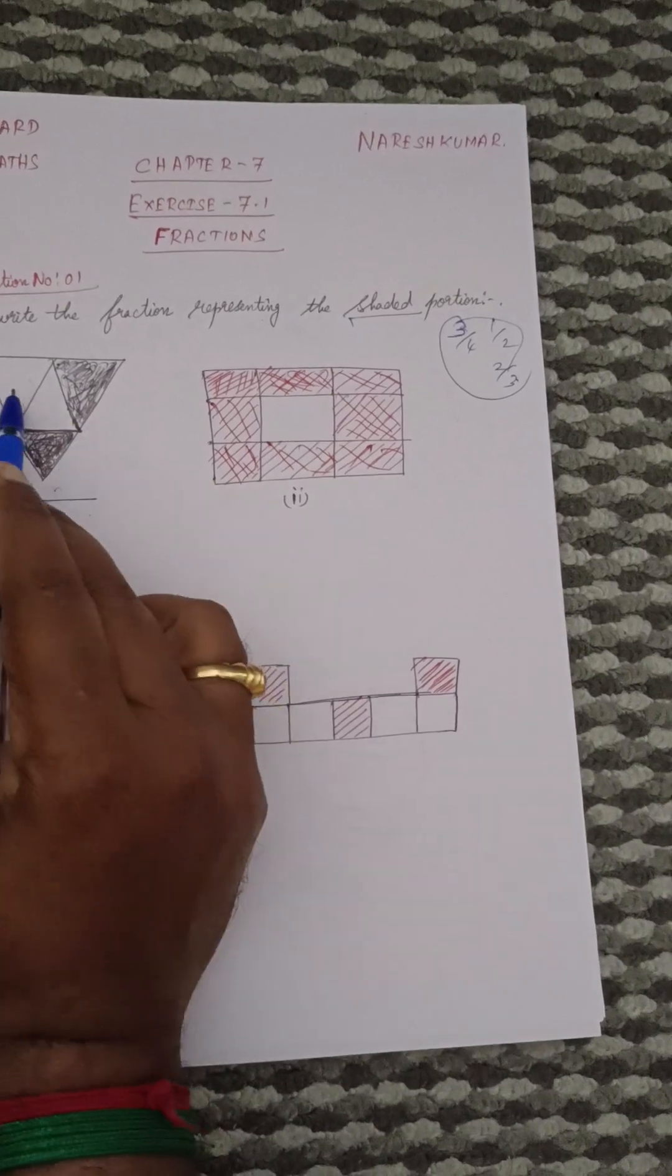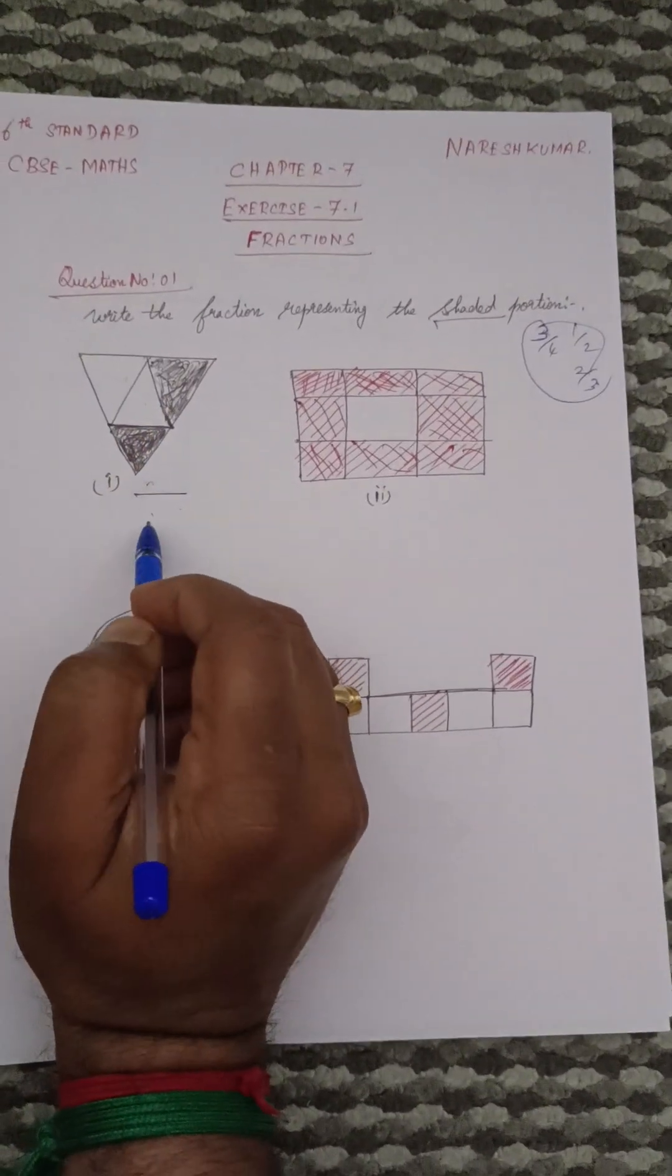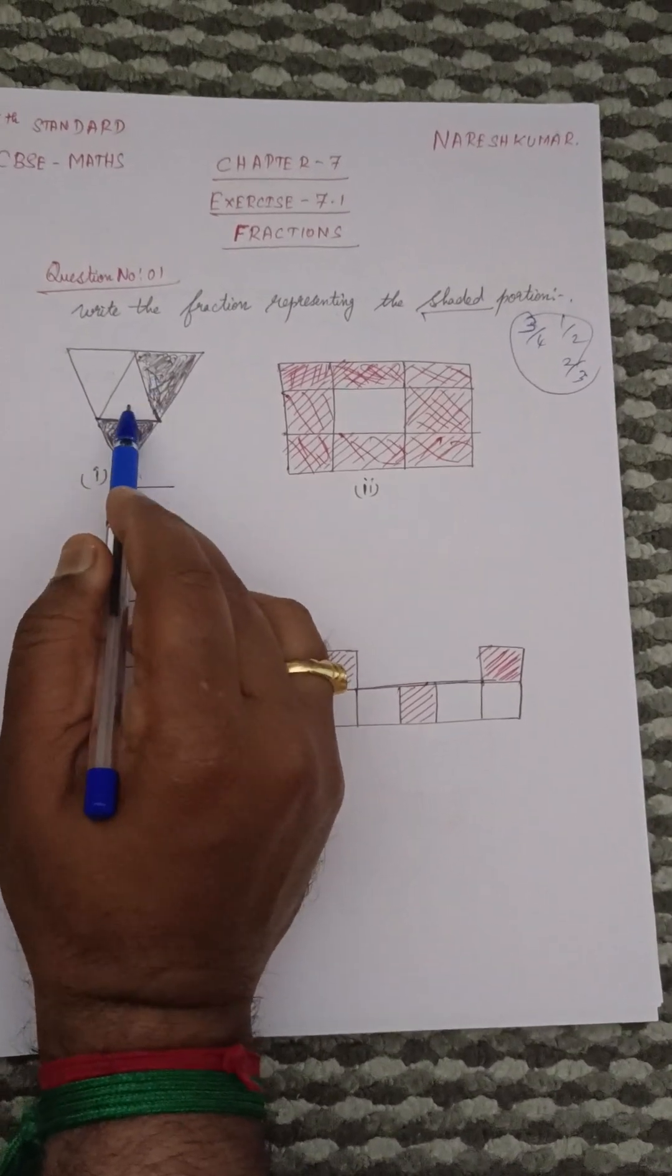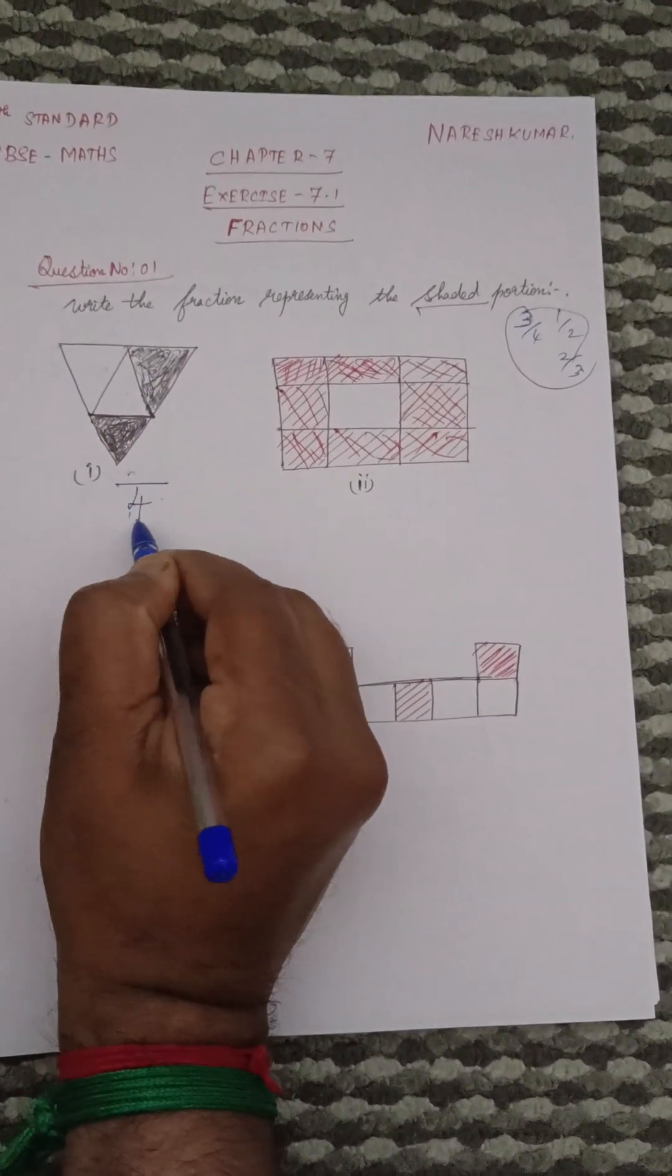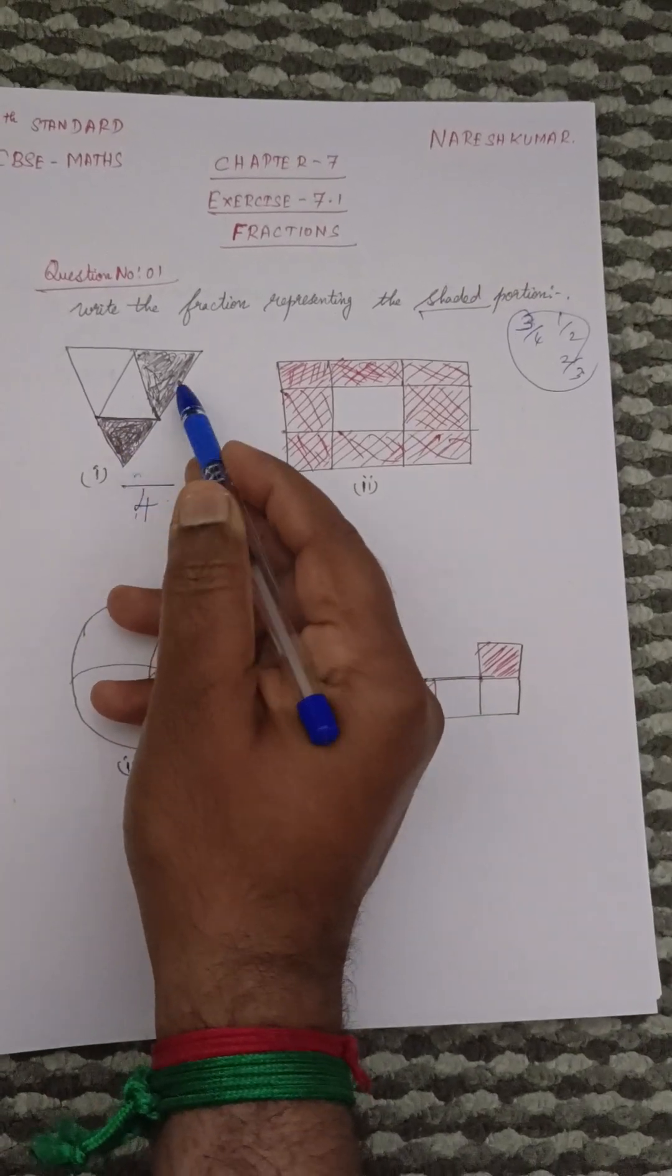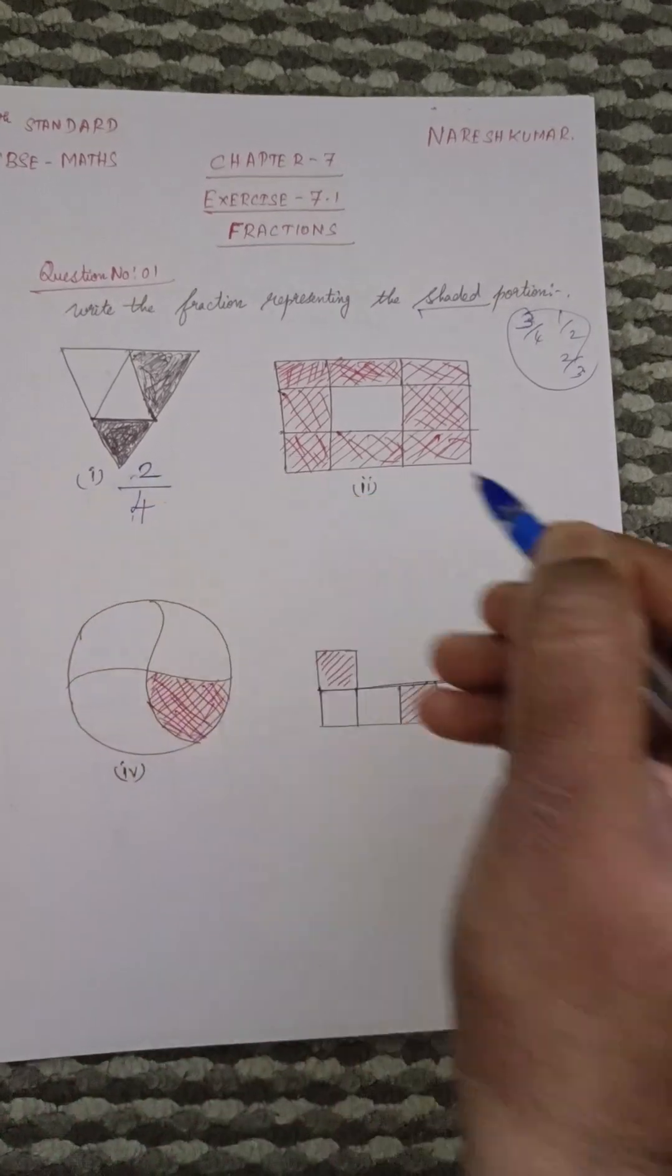Denominator should be written as the total number of spaces. So denominator, how many places are there? 1, 2, 3, 4. So 4. How many shaded portions are there? 1, 2. So 2 out of 4.